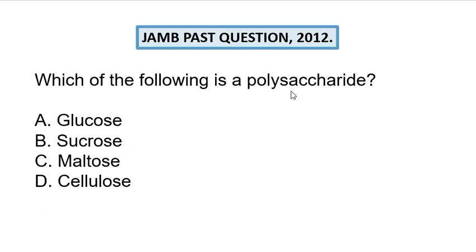Polysaccharide means more than 10, or 10 to 20, monosaccharides coming together. What about disaccharide? From the word 'di', meaning two — when two monosaccharides combine together they give a disaccharide. A monosaccharide, which is the smallest unit, is glucose — that is just one monomer.